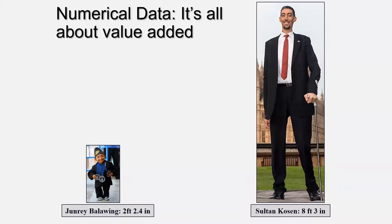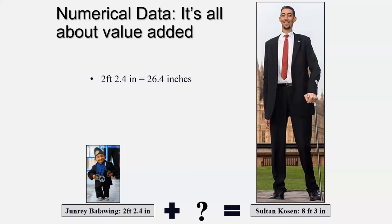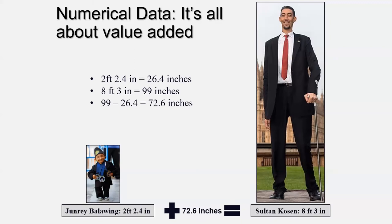On the other side of the data tree are numerical data, which are all about value added or subtracted. Take the example of Sultan Kosen, the tallest man in the world, and Jun-ri Balawing, the shortest man alive. While they each have many qualitative characteristics, one very distinct numerical difference between them is their height, which happens to be a continuous variable. This is demonstrated by converting their feet to inches and subtracting them to arrive at a value of 72.6 inches — meaning if we want to reach the height of Sultan beginning at the height of Jun-ri, we simply add 72 inches. The values within a numerical data set have what is referred to as meaningful space between them; that is the space that can be measured.